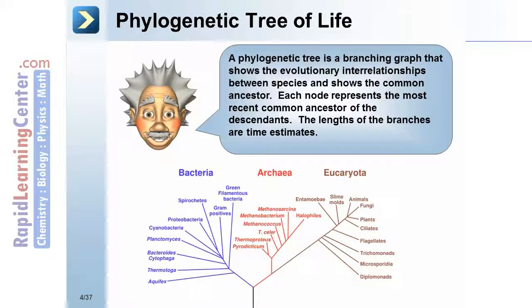Looking at this phylogenetic tree, notice the three domains: Bacteria, Archaea, and Eukaryota.